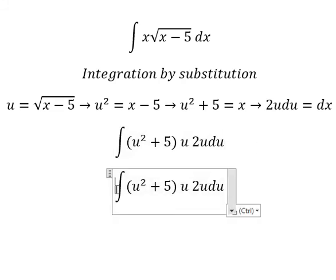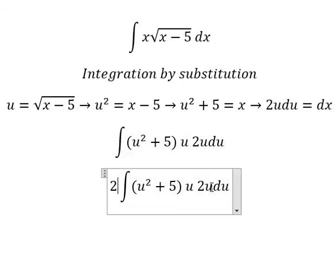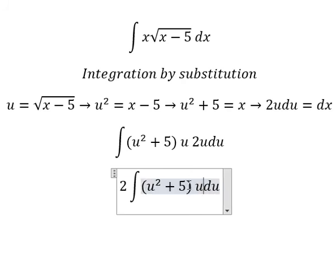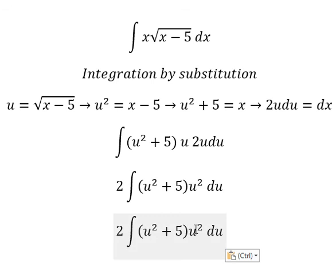So number 2, we put outside. u and u, we have u². u² multiplied by u² and number 5.